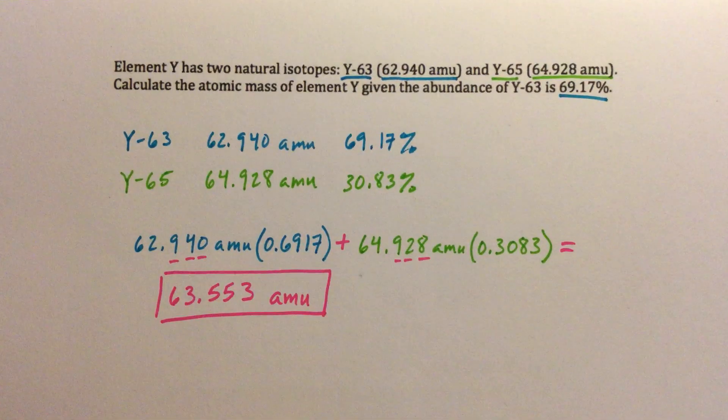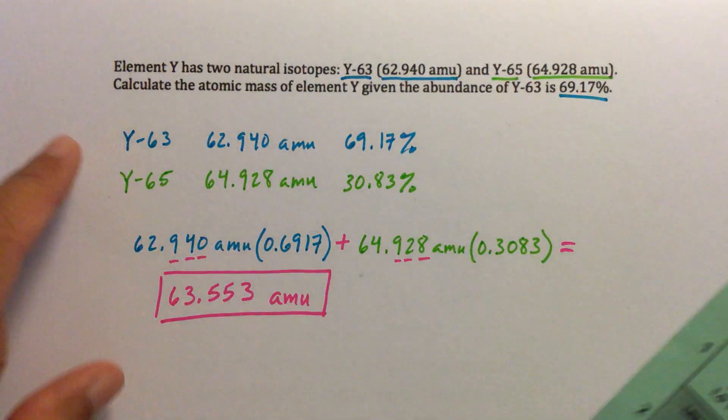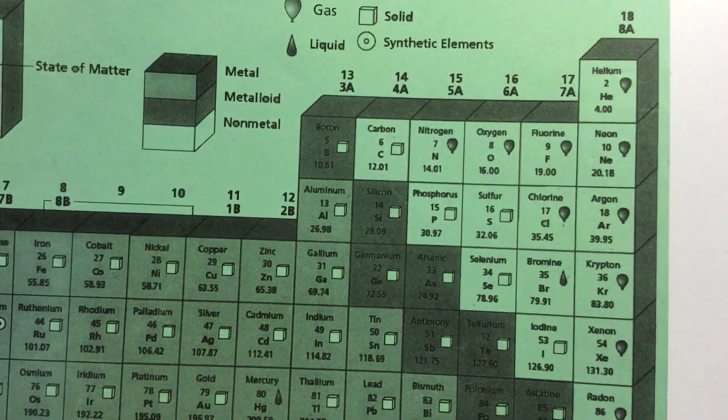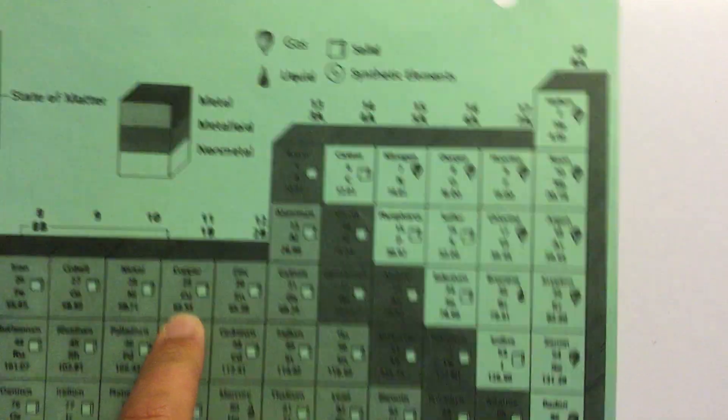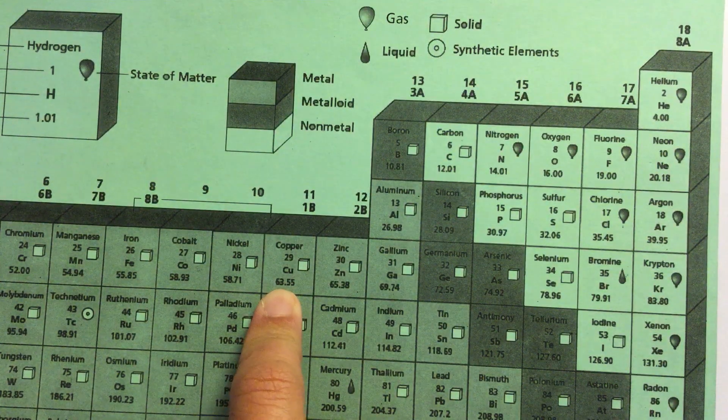And then usually when we finish an atomic mass problem, I always have you check your answer, because where are all of the answers for atomic mass? They're on your periodic table. So we can actually see 63, remember this was a mystery element, element Y, but if we check our periodic table, it actually is on here, 63.55.